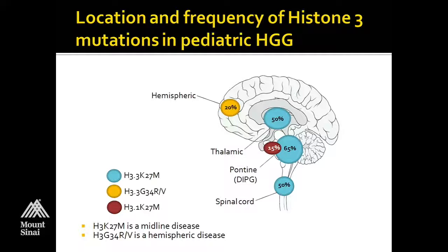In the midline, instead, we see the K27M mutation. In the thalamus, it's about 50% of high-grade gliomas. In the pons, it's considerably higher — almost 80% if we include both the 3.3 and the 3.1 mutations. In the spinal cord, high-grade glioma is about 50%. Overall, K27M seems to be a midline disease, whereas G34 seems to be a hemispheric disease.